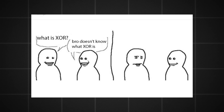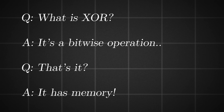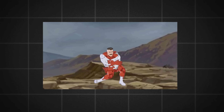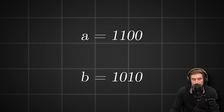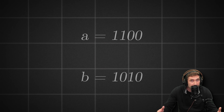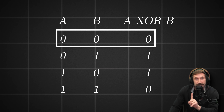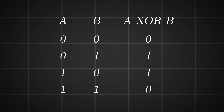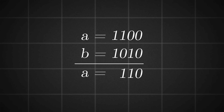XOR is a bitwise operation, but something unique about XOR is that it actually has memory. Let's say A equals 1,1,0,0 and B equals 1,0,1,0. If you XOR these two together — exclusive OR, meaning exactly one 1 gives a 1, two 1s give a 0, two 0s give a 0 — I'll set A to the result of this XOR.